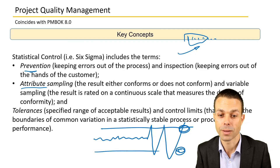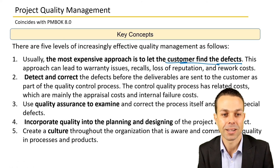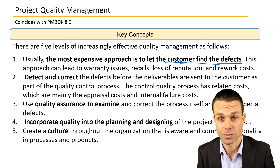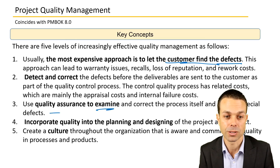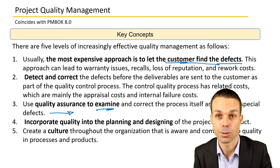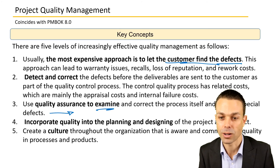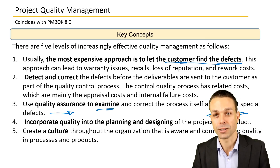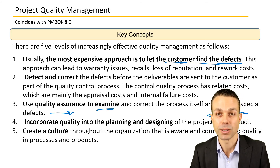The most expensive approach is to let the customer find those defects. Detecting and correcting defects before deliverables are sent to the customer is a key part of the quality control process. Using quality assurance to examine the correct process itself — not just specific defects — is also important: are we actually creating items in the right way to prevent defects in the future? Incorporating quality into the planning and design of the project and product, and creating a culture throughout the organization that is aware and committed to quality, are key themes.